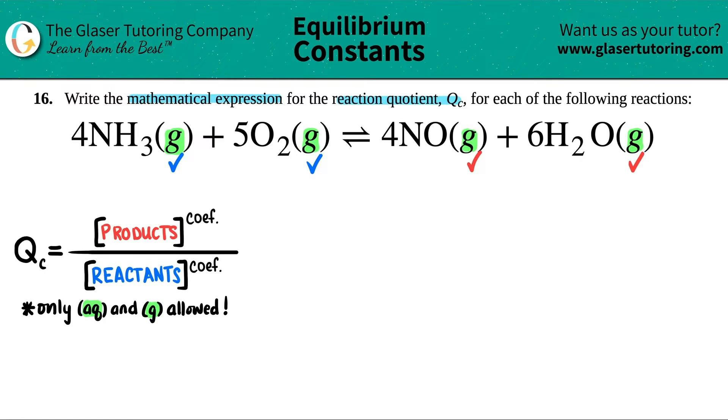Now I'm ready to write my QC formula. So I'm just going to write the division sign already. And let's work from top to bottom. So let's do products first. Products is this side. Let's work from left to right. Doesn't matter which one you state first, but let's go with NO.